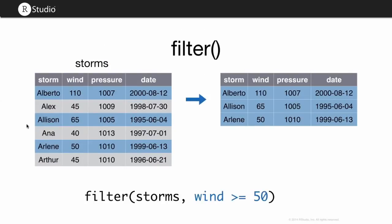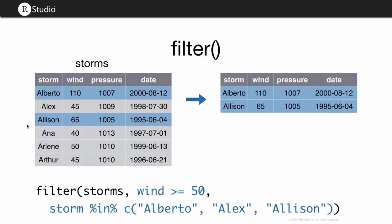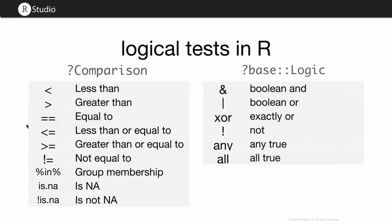Filter is analogous to select, except instead of selecting columns, it brings back rows. Or if your data is tidy, these would be observations. And the way filter works is you give it a logical test. So here I'm giving it the test where wind is greater than or equal to 50. What filter will do is it'll apply that test to each row in your data frame and give you back just the rows that pass the test. You can combine tests by putting a comma in between tests and what filter will do is it'll combine them as if there is an and statement between them. So these are only the rows where the wind is greater than 50 and the name, the storm name, is in Alberto, Alex, and Alice. If you want to do an or condition, we'll just use the Boolean operator for or in R to combine two tests into a single test.